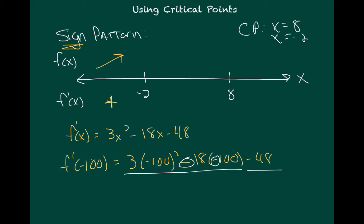At negative 2, the derivative equals zero, so the function is neither increasing nor decreasing there. Now let's look at what's going on between negative 2 and 8. I'll plug in zero, which is easy to work with. F prime of 0 equals negative 48. Since the first derivative is negative, the original function must be decreasing.